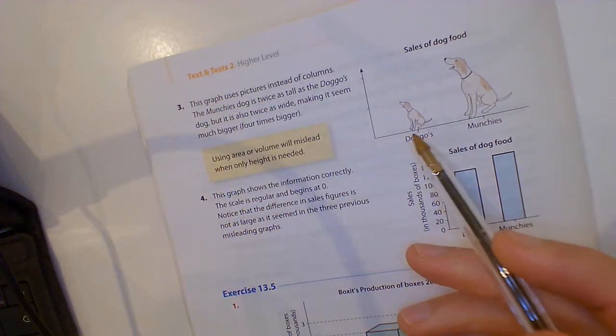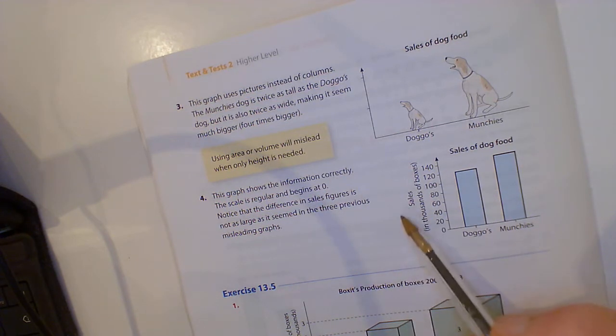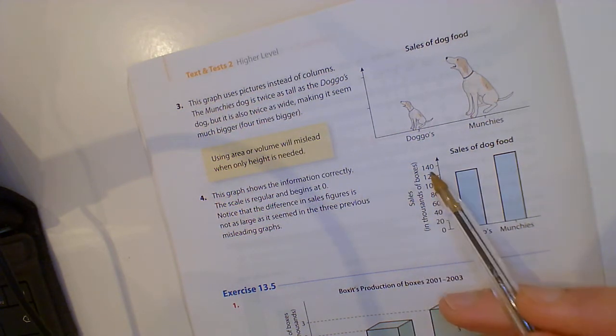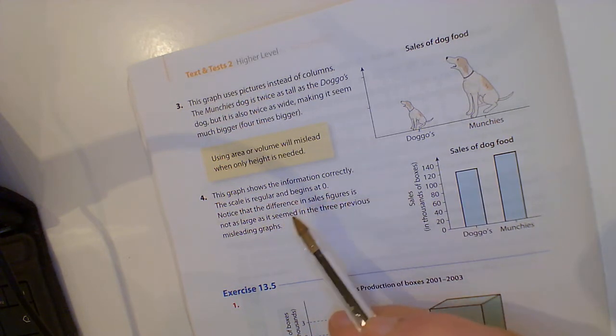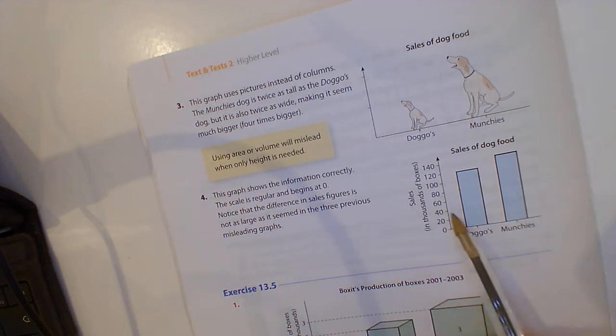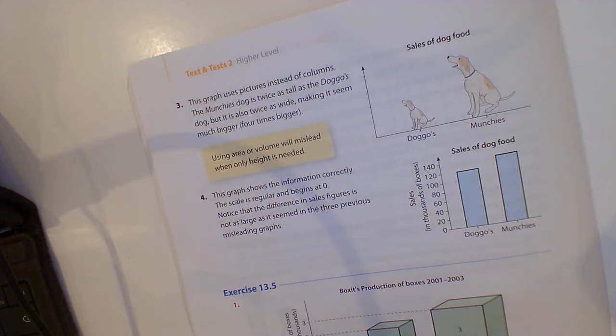Okay, this graph here shows correct information. Okay, perfect. The scale is regular, begins to zero. Notice the difference in sales figures is not as large as seems in the three previous misleading graphs. So this is the graph of the Doggos and Munchies that it should have been like, the one I did before. Now look